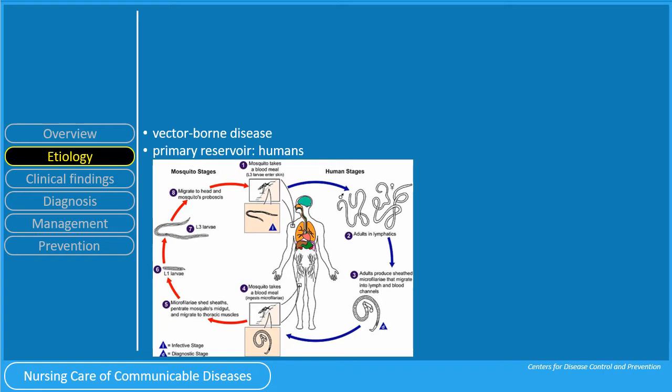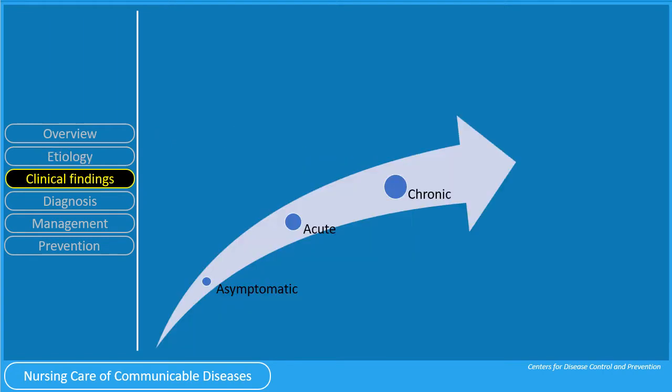An adult worm lives for about 5 to 7 years. Although the parasite damages the lymph system, most infected people have no symptoms and will never develop clinical symptoms. These people do not know they have lymphatic filariasis unless tested. Symptoms may take 9 months to 1 year to manifest after the initial infection.